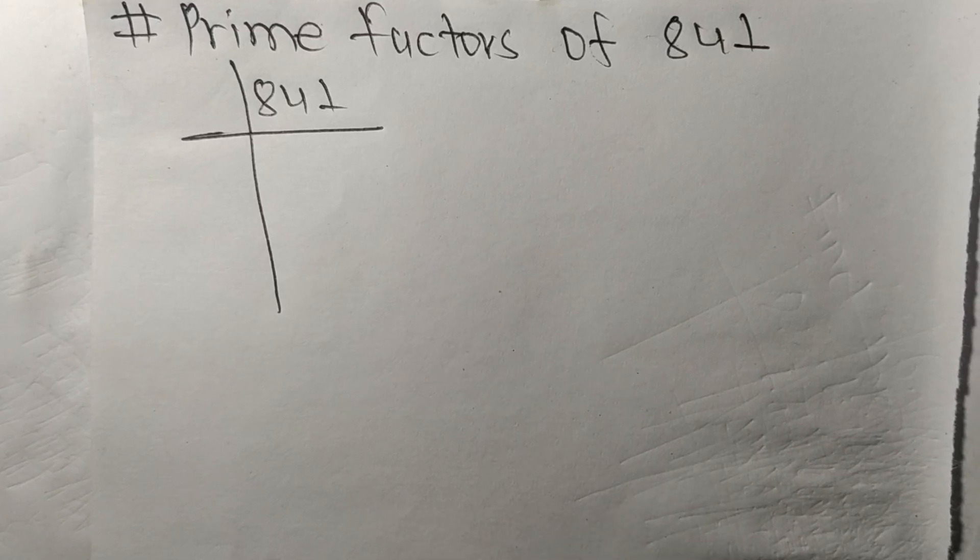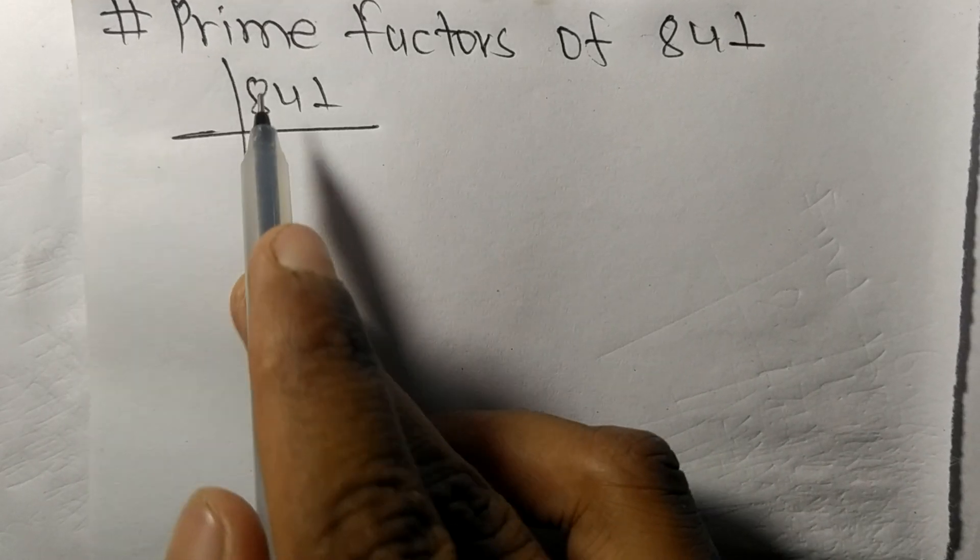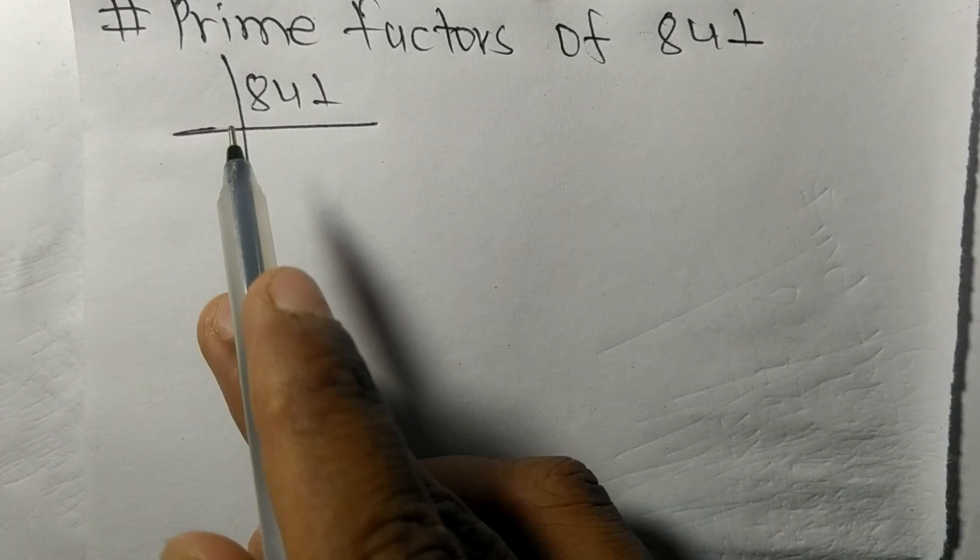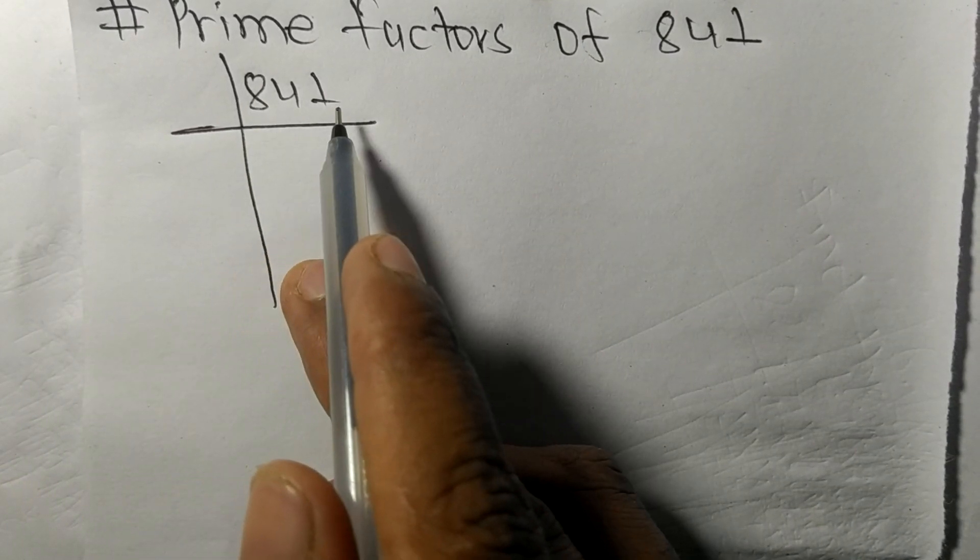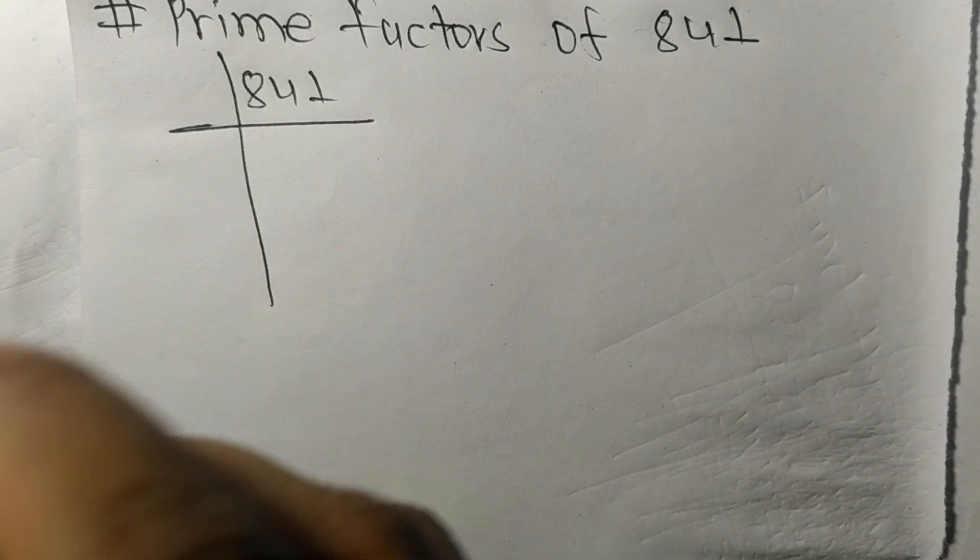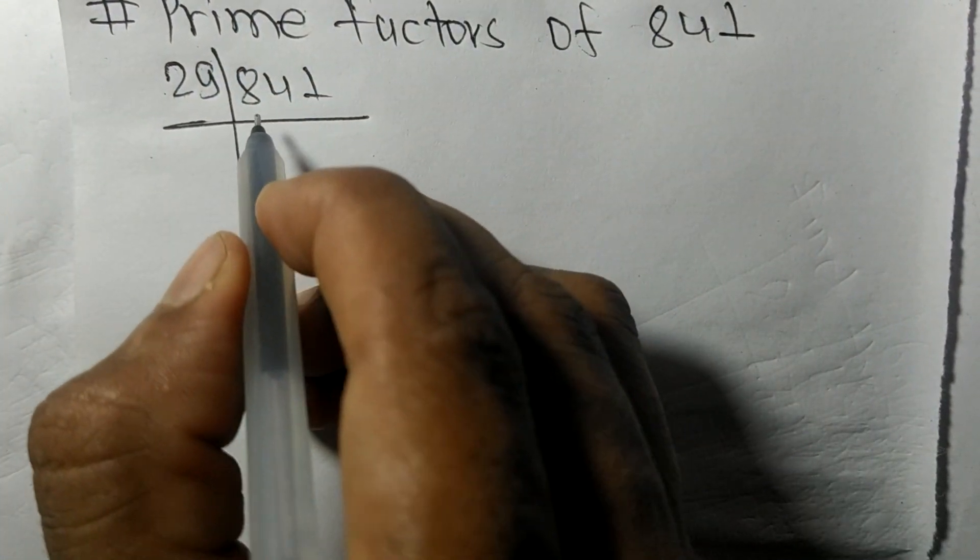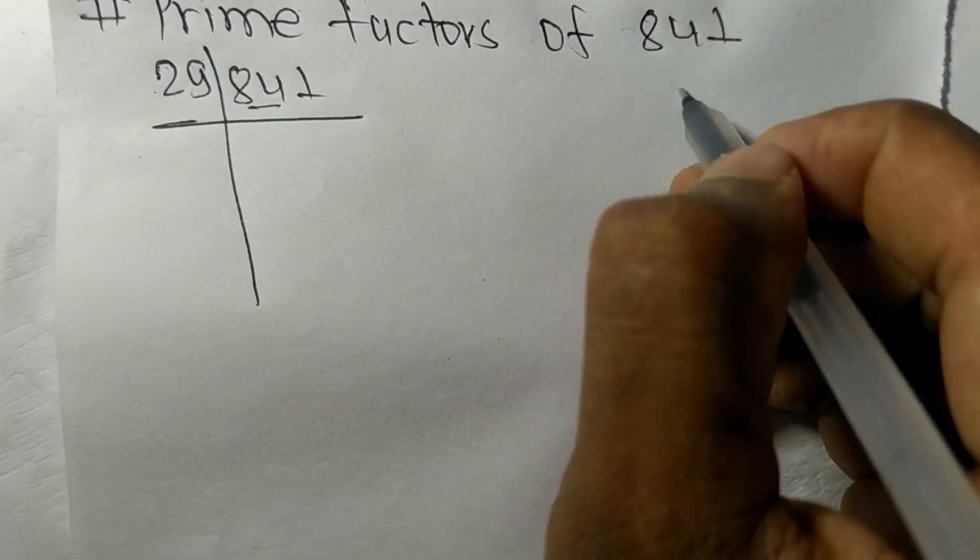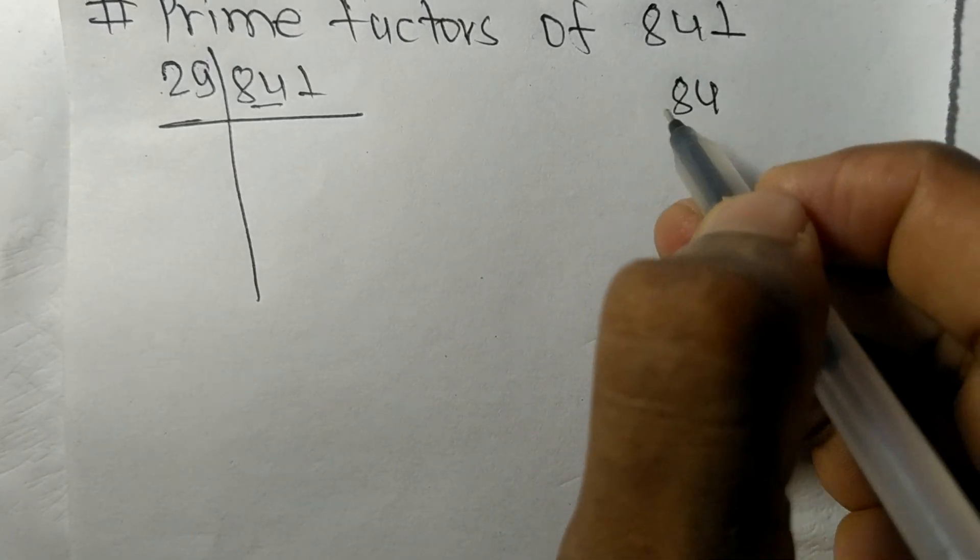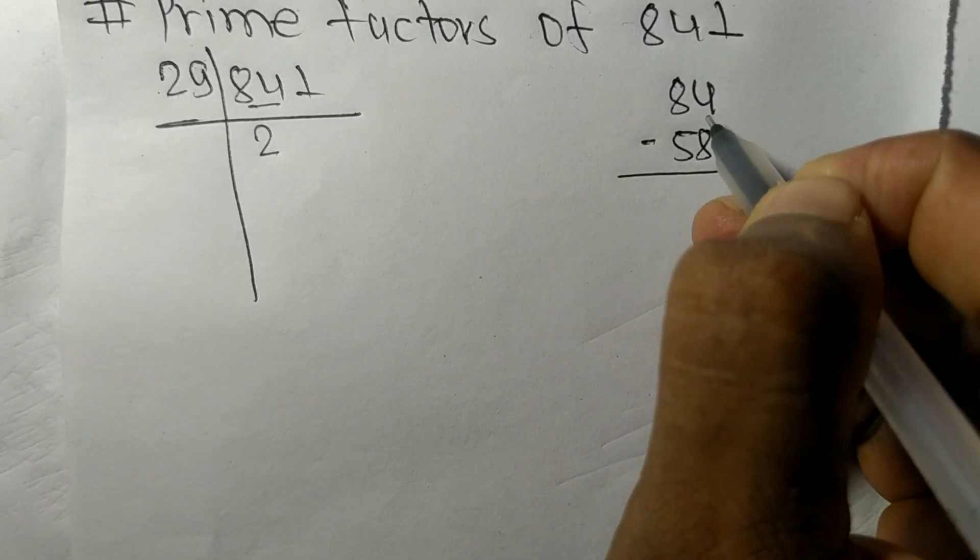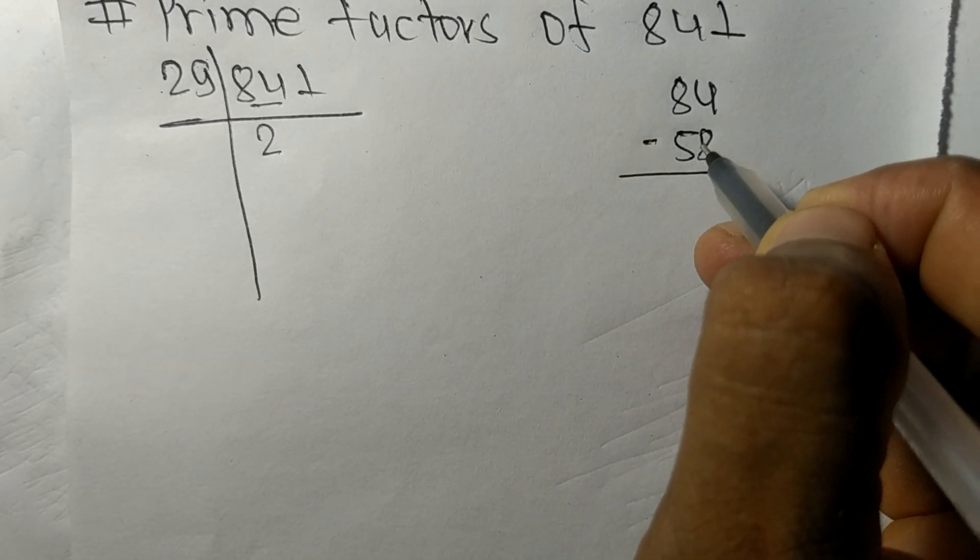So today in this video we shall learn to find the prime factors of 841. 841 is exactly divisible by 29. First we have 84, so 29 times 2 is 58, and on subtracting 84 minus 58 we get 26.